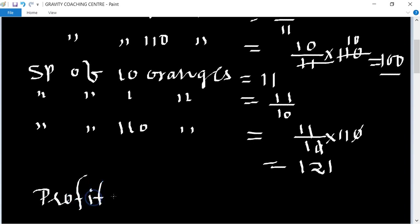Profit equals SP minus CP. So profit is 121 minus 100, equal to 21. So rupees 21 is the profit.